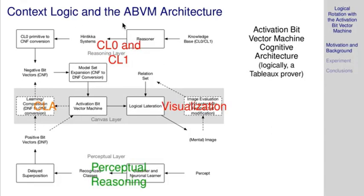Where are the different logics in this diagram? Up here we have the reasoning layer. CL0 and CL1 are fragments of first order logic and full first order logic equivalents. Then we have the atomic context logic and the visualization component which is key to the task. All this rests upon the perceptual layer.